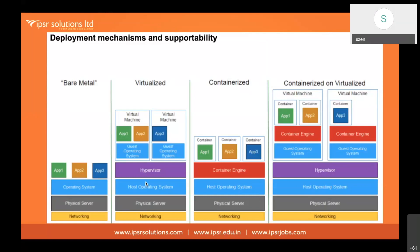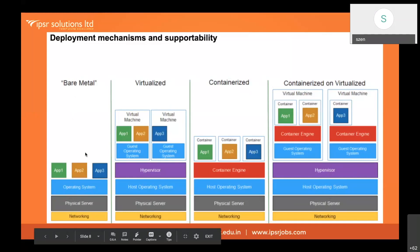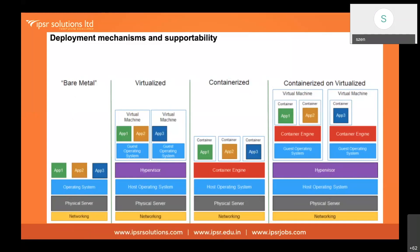In virtualization, we solved the problem by creating virtual machines. Application three is isolated from applications one and two — anything happening to one doesn't affect the other because it's a separate virtual machine. But the issue is resource utilization: for isolating applications, we are running multiple operating systems, which means we're consuming more resources. For a business, that's not profitable.